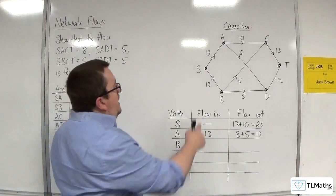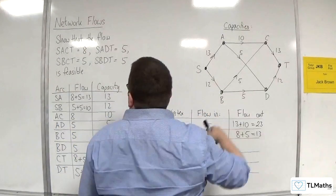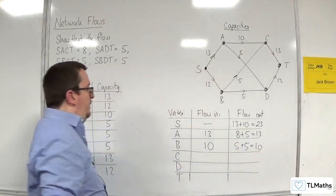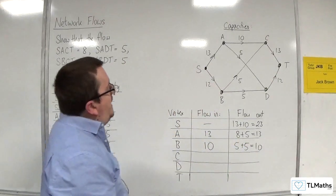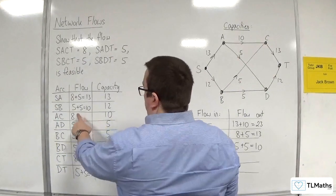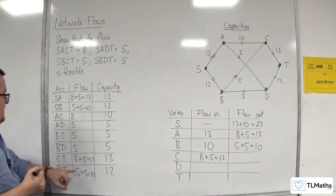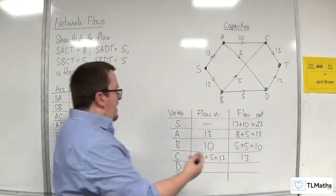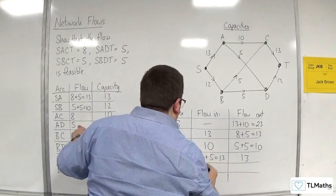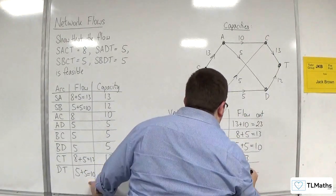The flow into B is just SB, which is 10. The flow out of B is BC and BD: BC is 5 and BD is 5, which is 10 — so that matches. The flow into C is AC and BC: 8 plus 5 makes 13. Coming out of C is CT, which is 13 — they match. Flowing into D we've got AD and BD: AD is 5 and BD is 5, so that's 10. Coming out of D is DT, which is 10 — so that's all good.